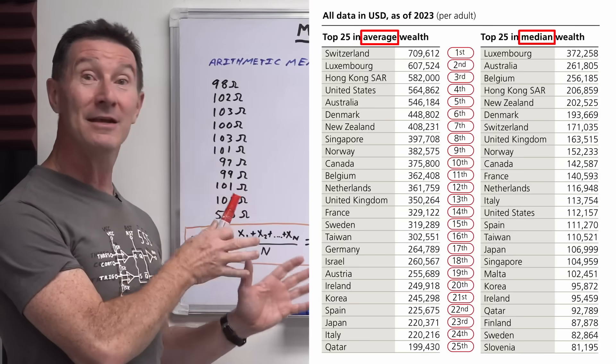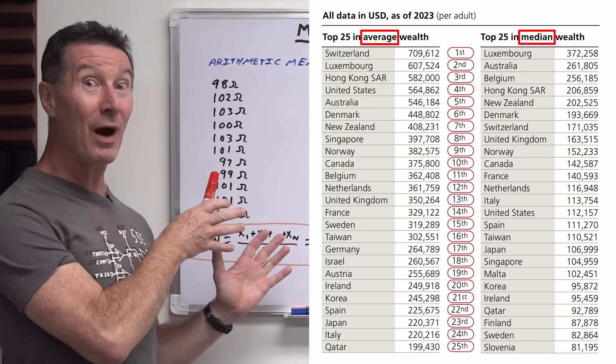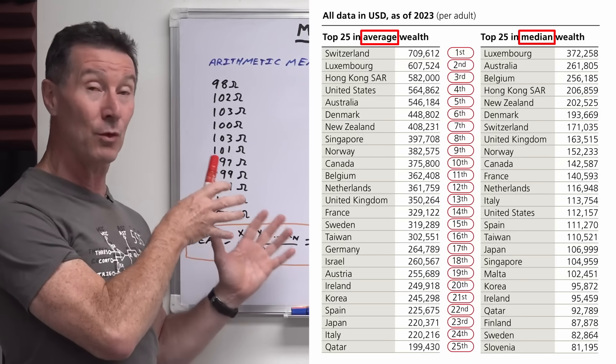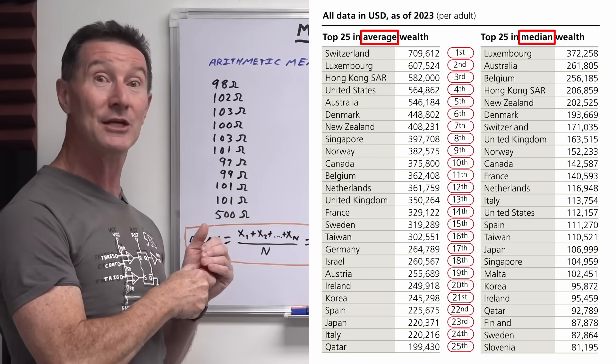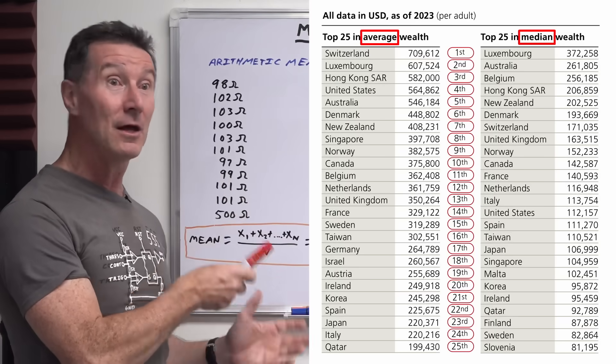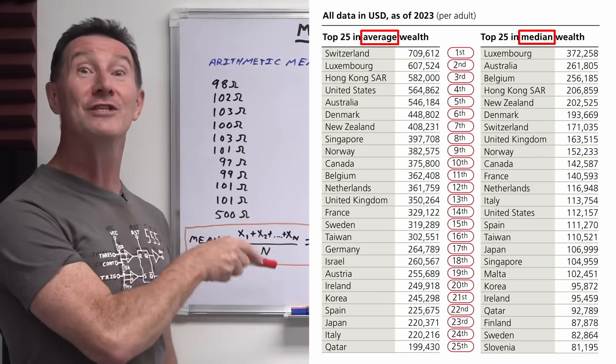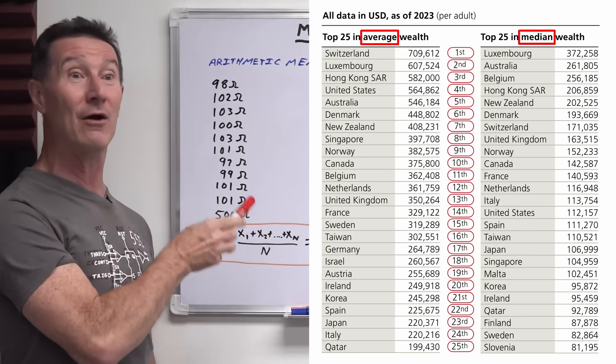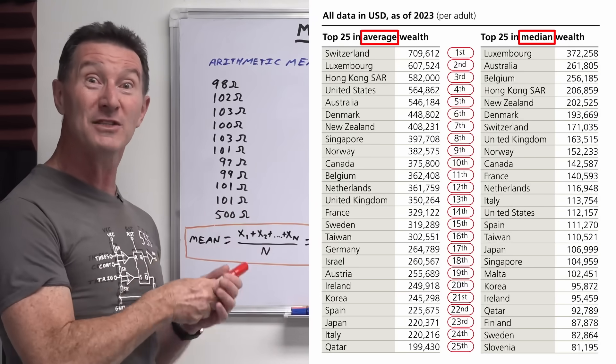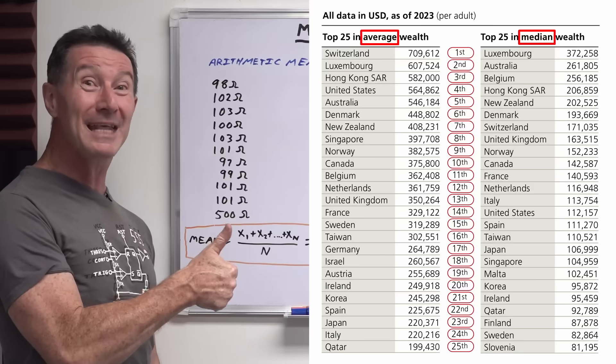And look at the difference now. Just by changing that one word, average to median, Switzerland's suddenly gone from number one in the world, wealthiest nation, or wealthiest individuals in nations, to number seven. The US has gone from a respectable number four to 14th in the world now. And Australia's gone from five to number two. A little bloody beauty.